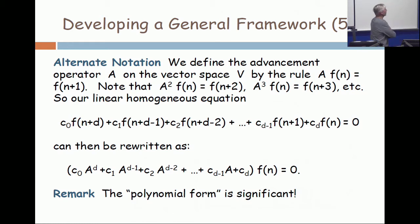So this linear recurrence, C0 F of N plus D, C1 F of N plus D minus 1, et cetera, all the way down to CD times F of N, can now be rewritten the way I've done on the bottom of the slide. C0 A to the D, C1 A to the D minus 1, et cetera. And what's important there is to see that as a polynomial in the advancement operator.